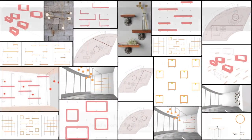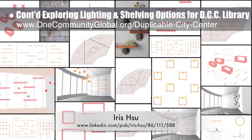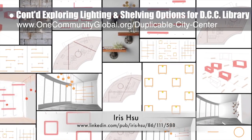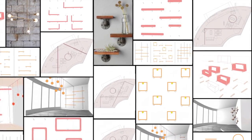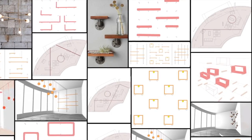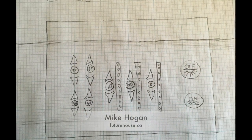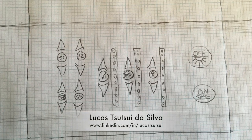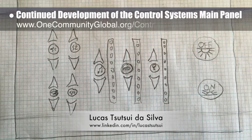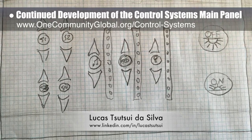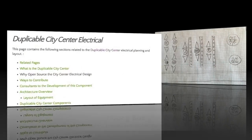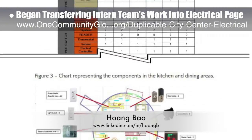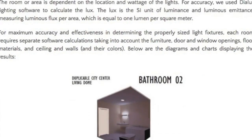Iris Hsu, industrial designer, continued exploring lighting and shelving options for the duplicable city center library — round two of research, exploration, and design outlining for open source and DIY lighting and shelving to go with the DIY pipe furniture chairs and couches she designed for this social and recreation space. Behind the scenes, Mike Hogan, automation systems developer, and Lucas Tasui De Silva, fourth-year computer engineering student, continued development of the control system's main panel, arriving at what we think will be our final design. Wang Bao, software developer, also began transferring the work of last year's intern team into the new duplicable city center electrical page — the first third of complete content is now live.